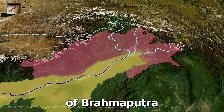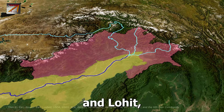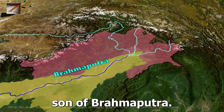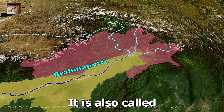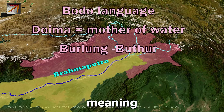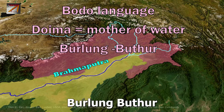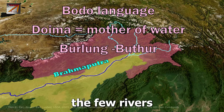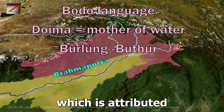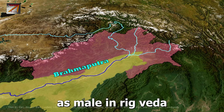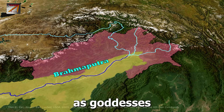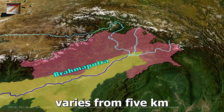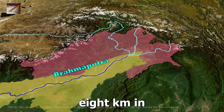After the confluence of Brahmaputra with Dibang and Lohit, the river gets its name Brahmaputra, meaning 'son of Brahma'. It is also called Doima, meaning 'mother of water', as well as Burlung Buthur by the native Bodo tribes. It is one of the few rivers attributed as male in the Rig Veda, while most rivers are attributed as goddesses. The Brahmaputra's width varies from 5 km to 8 km in this area.